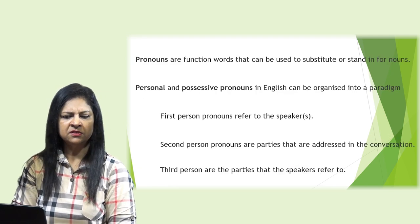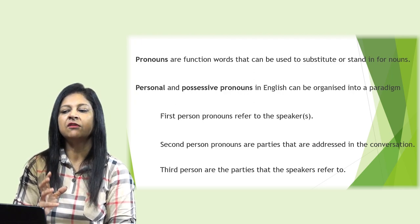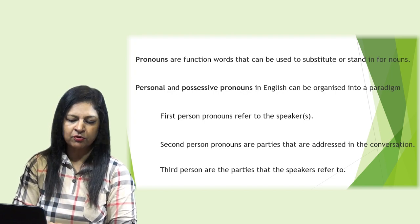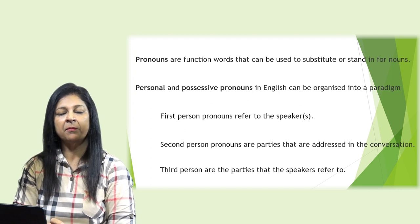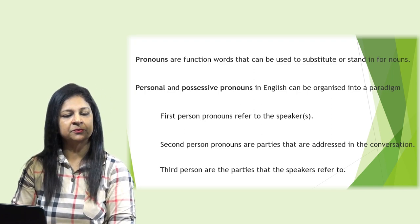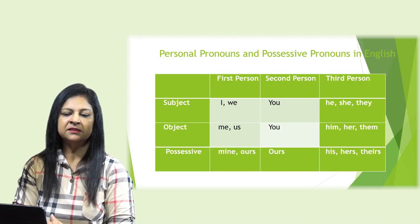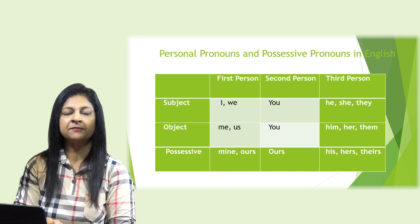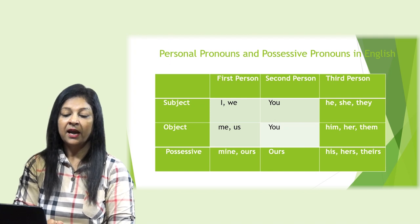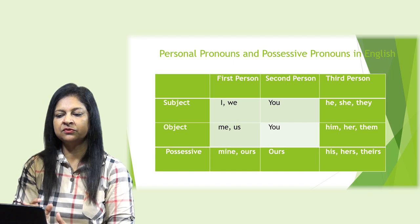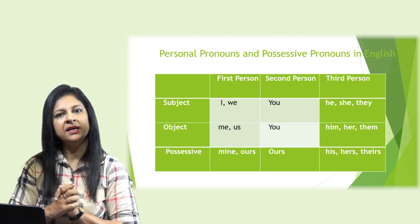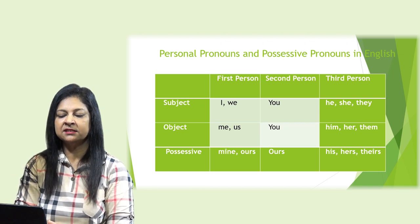Pronouns are function words that can be used to substitute or stand in for nouns. Personal and possessive pronouns in English can be organized into paradigms. First person pronouns refer to the speaker or speakers; second person pronouns are parties addressed in the conversation; third person pronouns are the parties the speaker refers to. Looking at the table: subject pronouns — first person I/we, second person you, third person he/she/they. Object pronouns — first person me/us, second person you, third person him/her/them. Possessive pronouns — first person mine/ours, second person yours, third person his/hers/theirs.